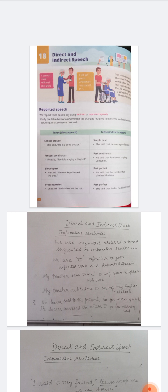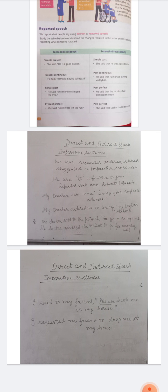Today I am going to discuss the rules relating to imperative sentences. In imperative sentences, we change 'said to' into 'requested,' 'ordered,' 'advised,' or 'suggested,' depending upon the tone of the sentence. And we use 'to' infinitive to join the reported verb and reported speech.